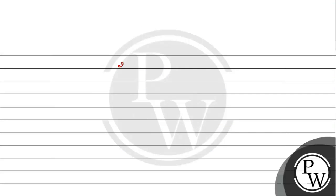Put h equal to 5: 25 equals x squared plus y squared. Therefore, solving for y: y squared equals 25 minus x squared, so y equals square root of (25 minus x squared). This is our equation one.